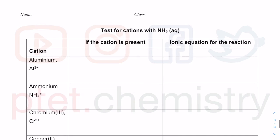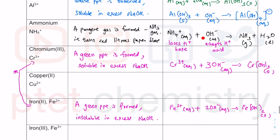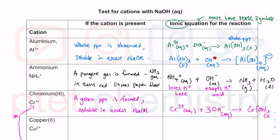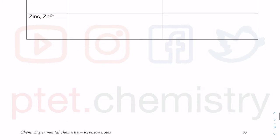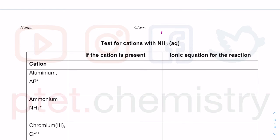The ionic equation with NH₃ is going to be very similar for precipitation reactions with hydroxide. Ammonia is a weak base. In the presence of water, it will reversibly dissociate to give you NH₄⁺ (ammonium) as well as the hydroxide ions. That is what makes the pH greater than 7 — making it alkaline.